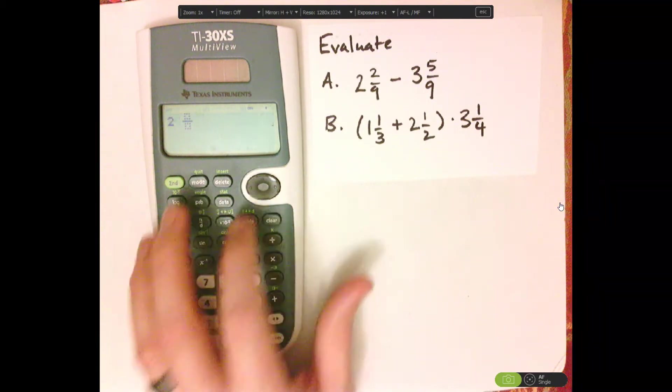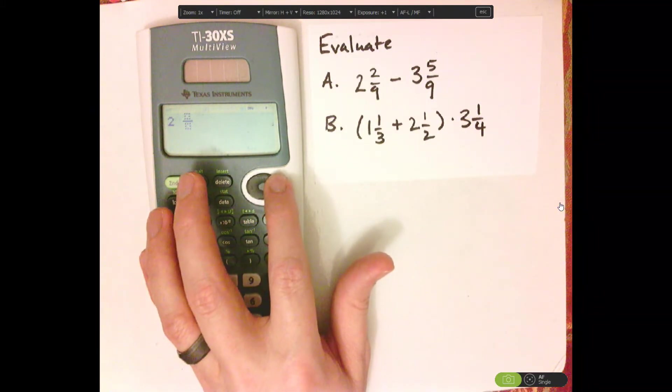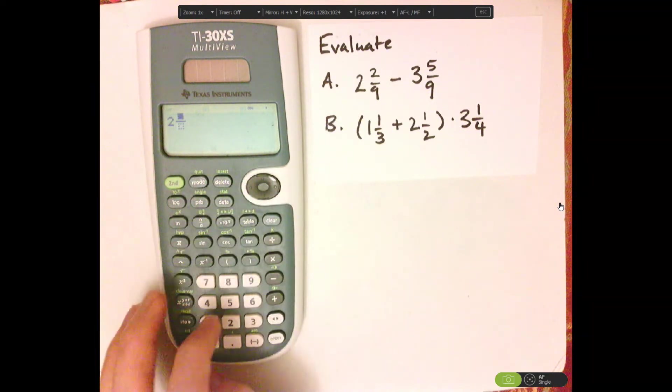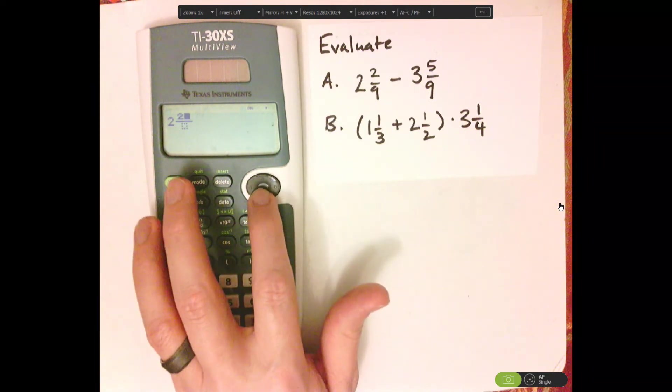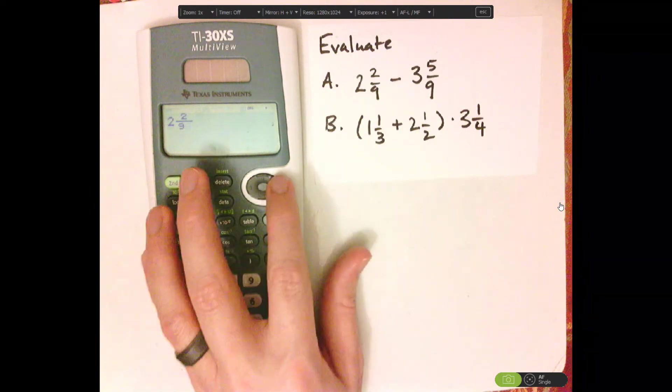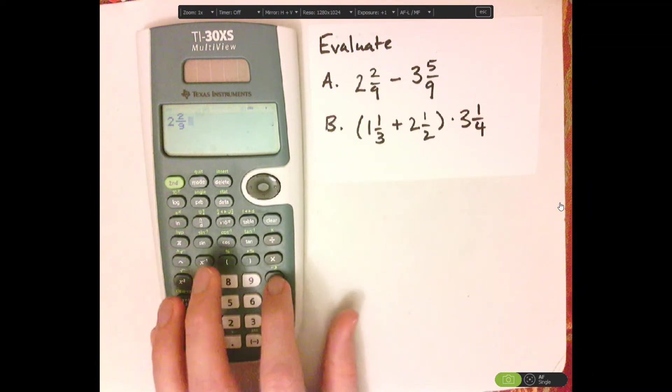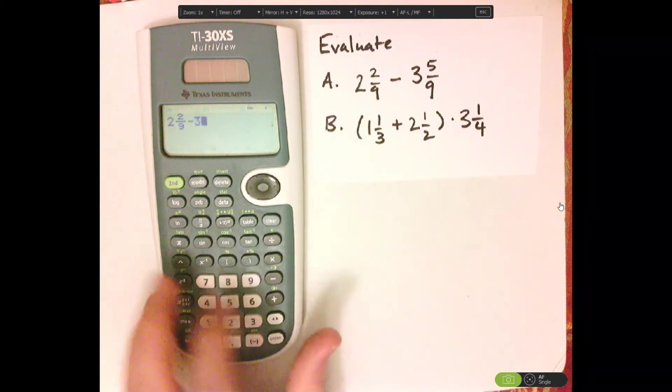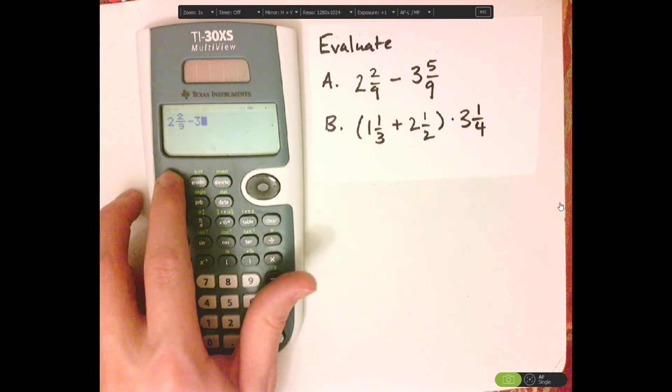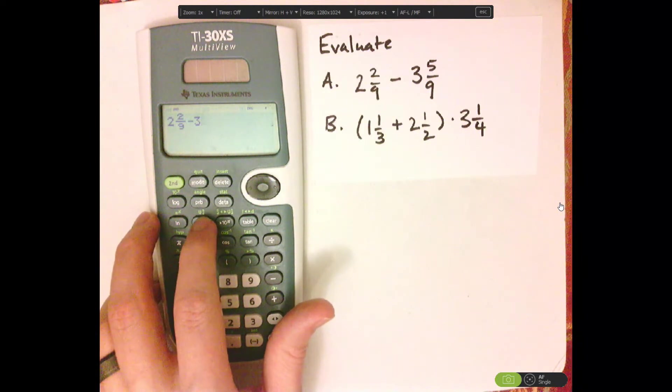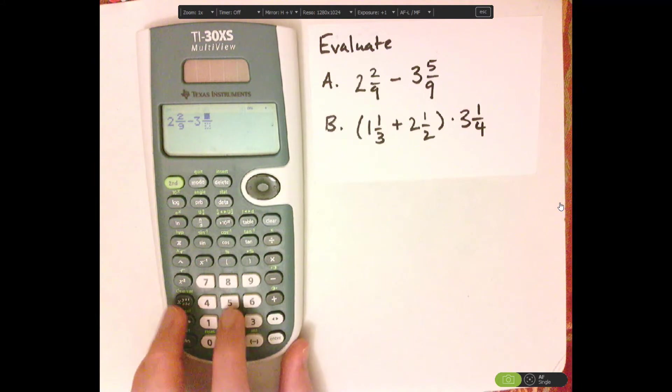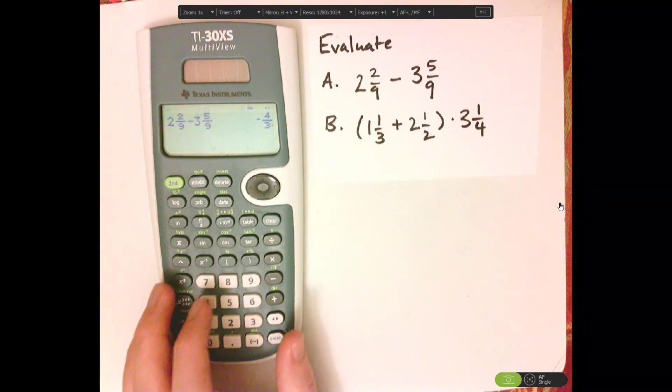So that would be two. Navigate using the arrows. So two, push down, nine, over, minus, I could push three, and then I can use that button. So second, and then UND, or ND to get the green. So that would be five over nine, and then enter.